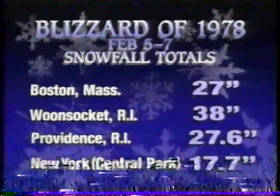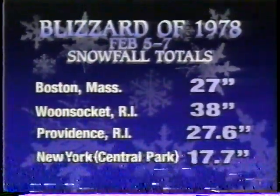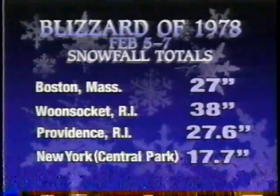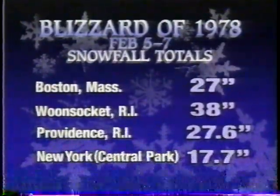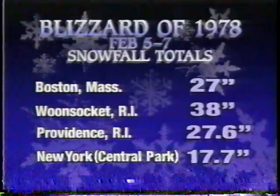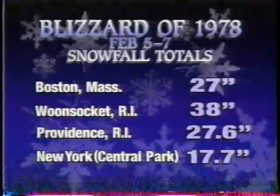The storm usually parallels the coast and at times can deposit very large amounts of snow and hurricane-force winds. The blizzard of '78 will long be remembered in the northeast — 27 inches fell in Boston, bringing the city to a grinding halt. That storm is regarded as one of the most intense of the century. A true nor'easter. Lisa Spencer, The Weather Channel.